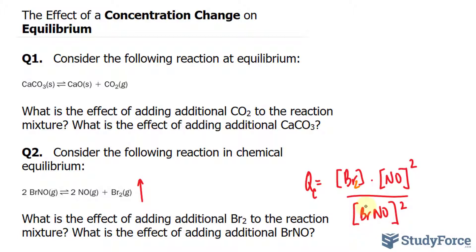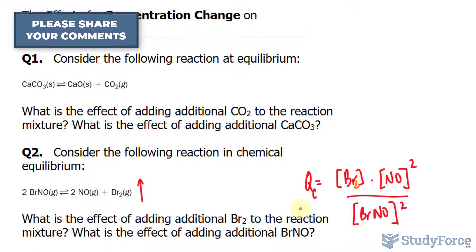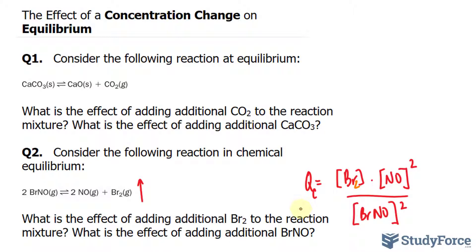By making this number larger, the number in the denominator of this fraction, it makes QC smaller. And when QC is smaller than KC, the reaction proceeds to the right. That is how to tell the effect of a concentration change on a reaction that's at equilibrium.